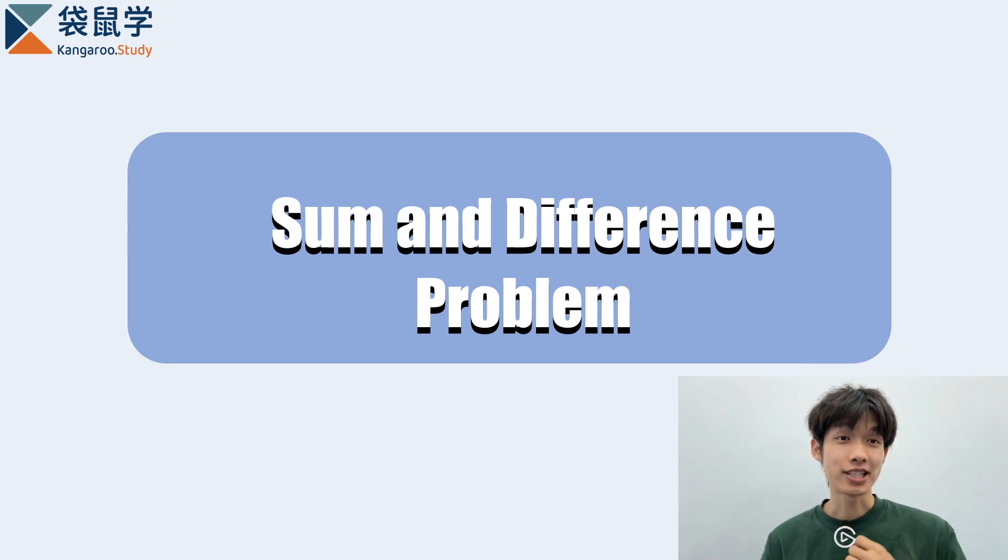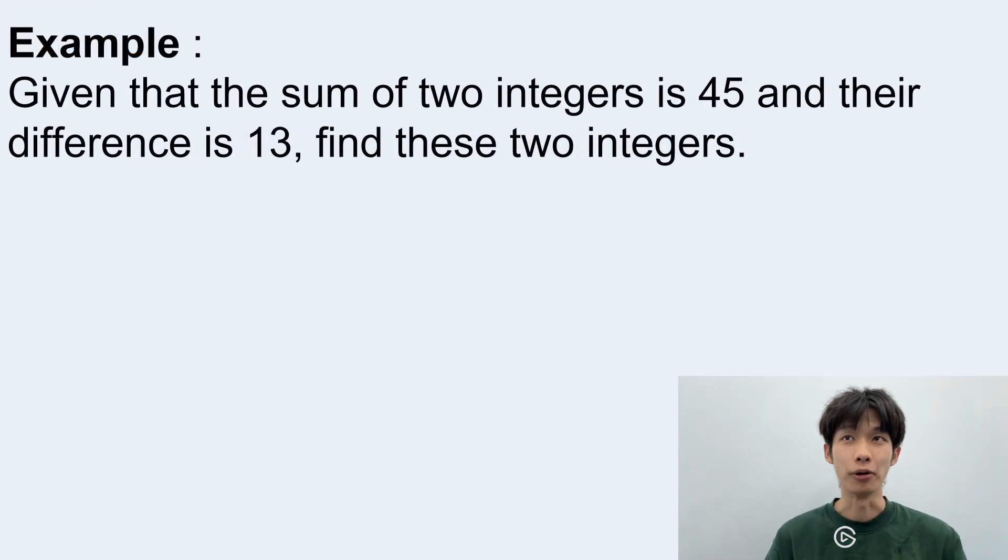Welcome to our channel. I'm TJ Ma. So for this video, we'll talk about the sum and difference problem for PSLE questions. Now here we have an example. Given that the sum of two integers is 45 and their difference is 13, find these two integers.